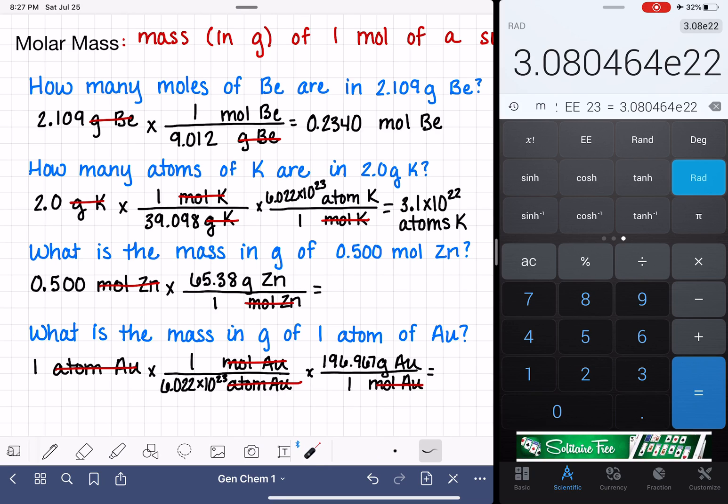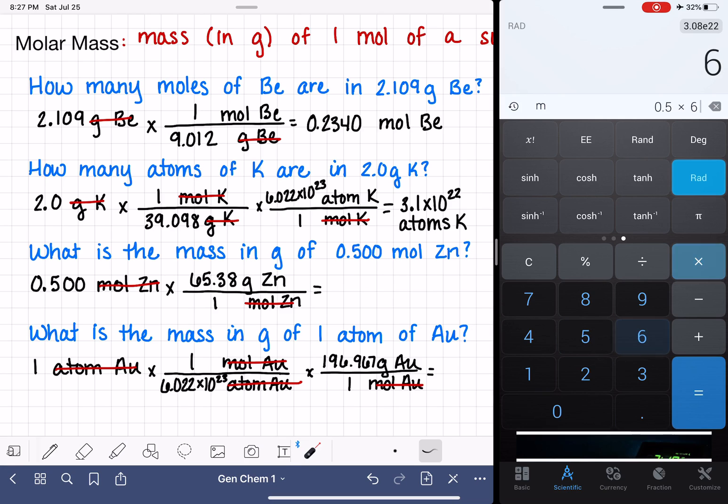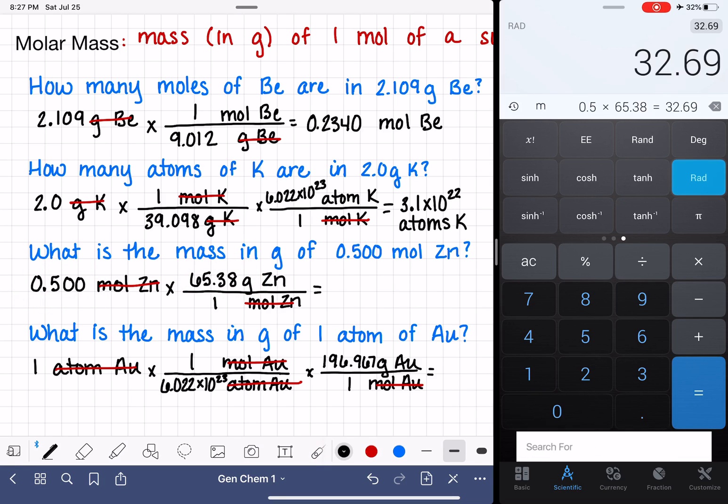For our next problem, we have 0.5 times 65.38. We have three significant figures and four significant figures. So our answer should have three. And that will be 32.7. The units are grams of zinc.